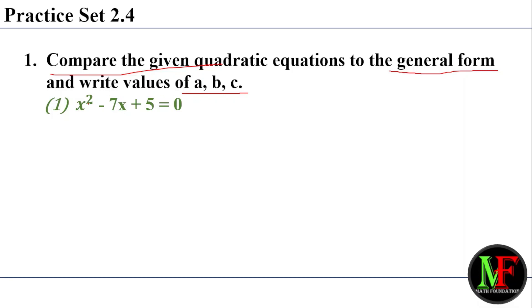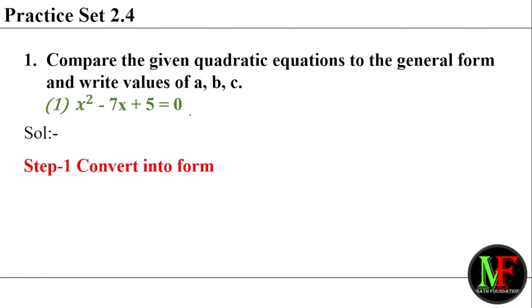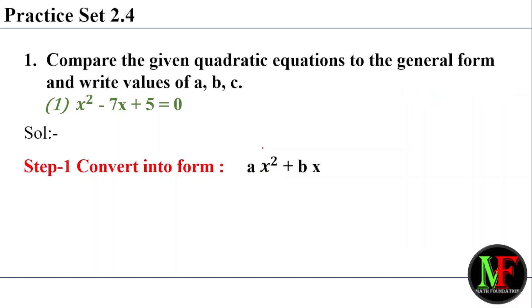Our equation is x squared minus 7x plus pi, equal to 0. The solution: step number 1 is to convert into the general form, which is the standard form.